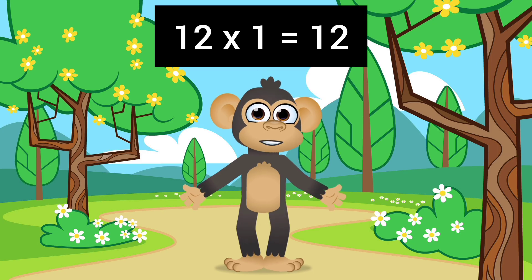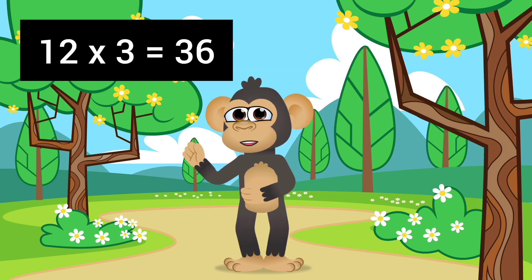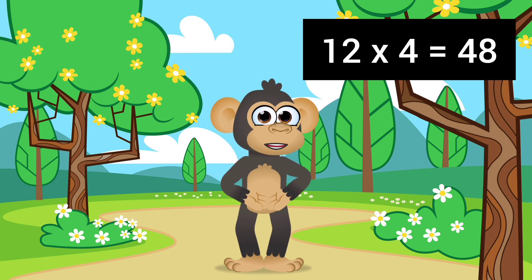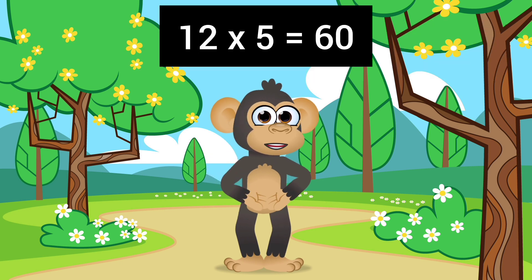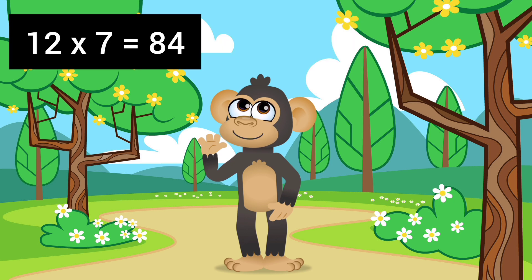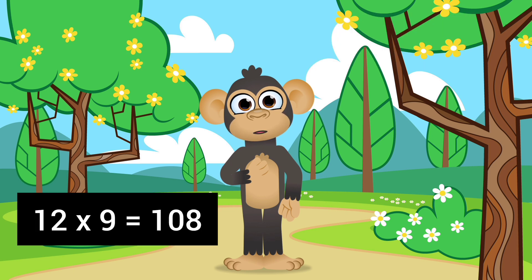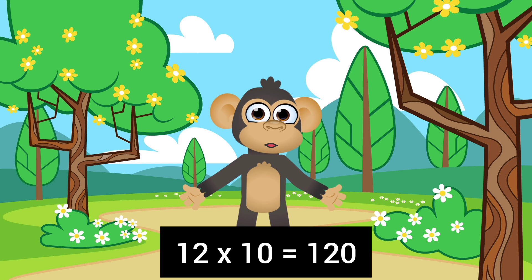Twelve ones are twelve, twelve twos are twenty-four, twelve threes are thirty-six, twelve fours are forty-eight, twelve fives are sixty, twelve sixes are seventy-two, twelve sevens are eighty-four, twelve eights are ninety-six, twelve nines are one hundred eight, twelve tens are one hundred twenty.